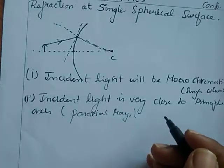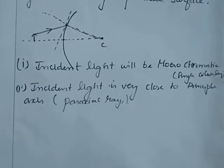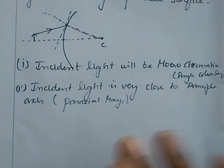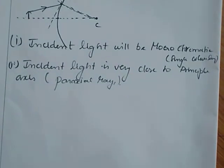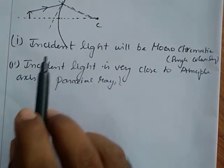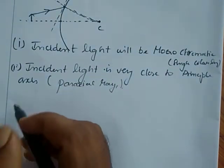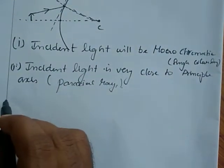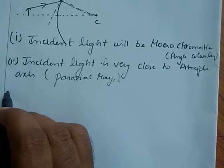The sign convention that you already followed in the spherical mirror applies here, except for focal length — I will explain what about the focal length. Our next topic is the equation for refraction at a single spherical surface.